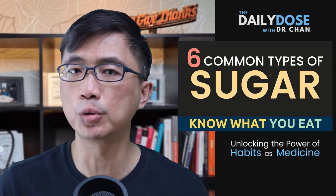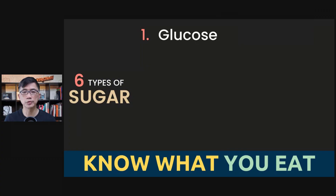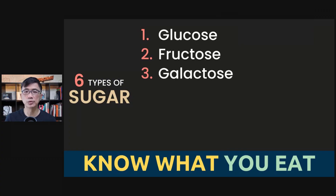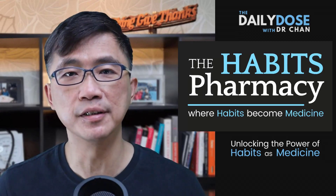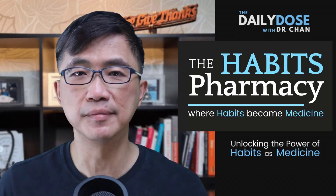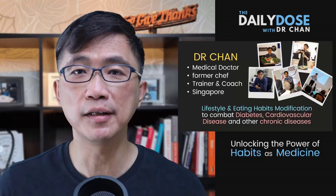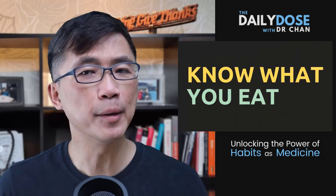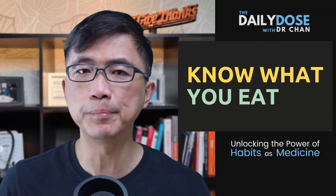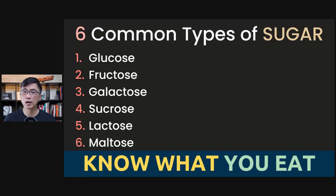Six common types of sugar: glucose, fructose, galactose, sucrose, lactose, and maltose. Do you know what they are and where they are commonly found? Welcome to the Habits Pharmacy, where habits become medicine. I'm Dr. Chan, your host. In this episode of Know What You Eat, I'm going to do a simple and short tutorial on common types of sugars.